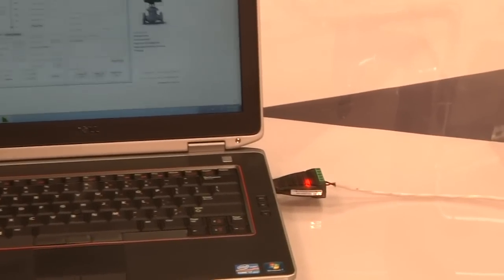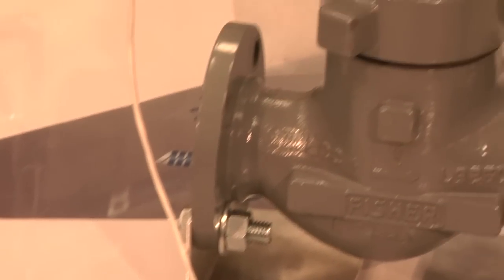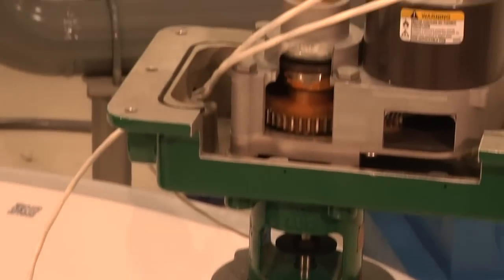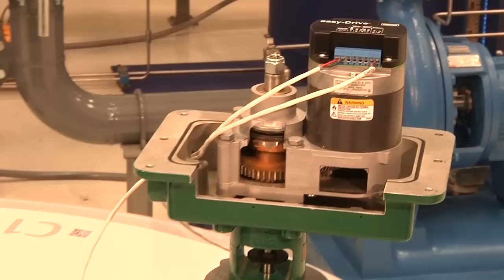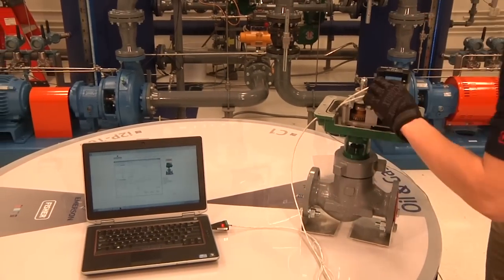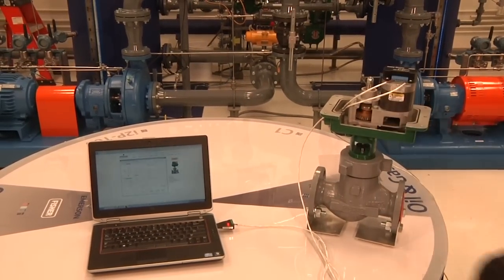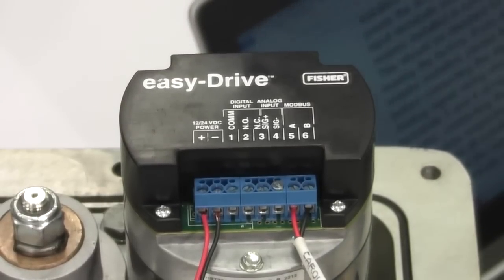As you can see, we have connected our laptop to the actuator via USB to Modbus adapter. The driver for the Modbus output from your PC should be installed before attempting to communicate with the actuator via Modbus. The EZ-Drive configuration software has already been installed on this computer. Make sure that Modbus cables leaving your computer are securely fastened to the Modbus terminals on the circuit board.